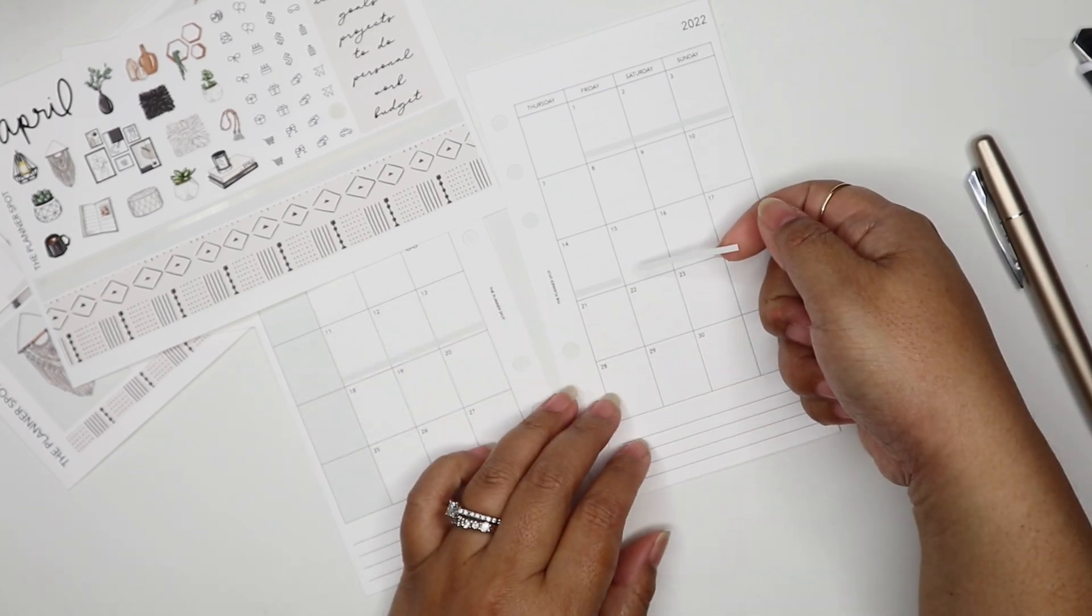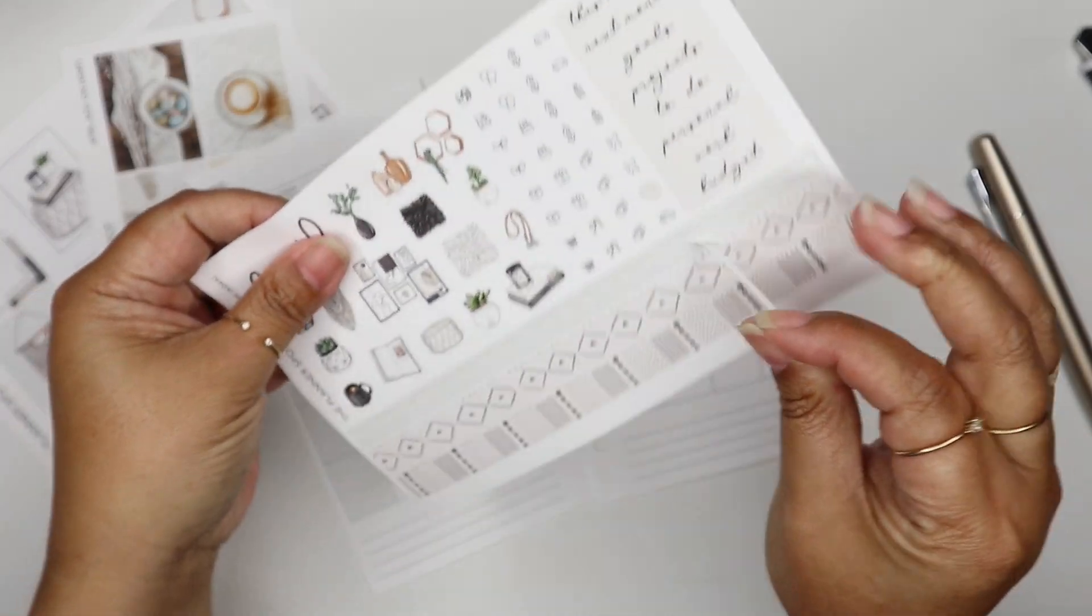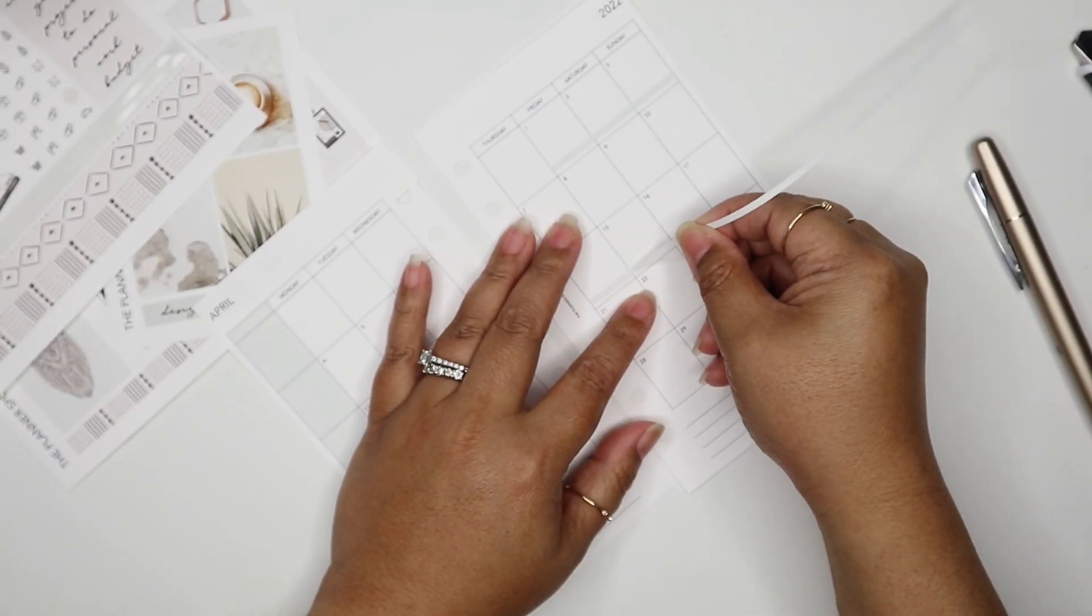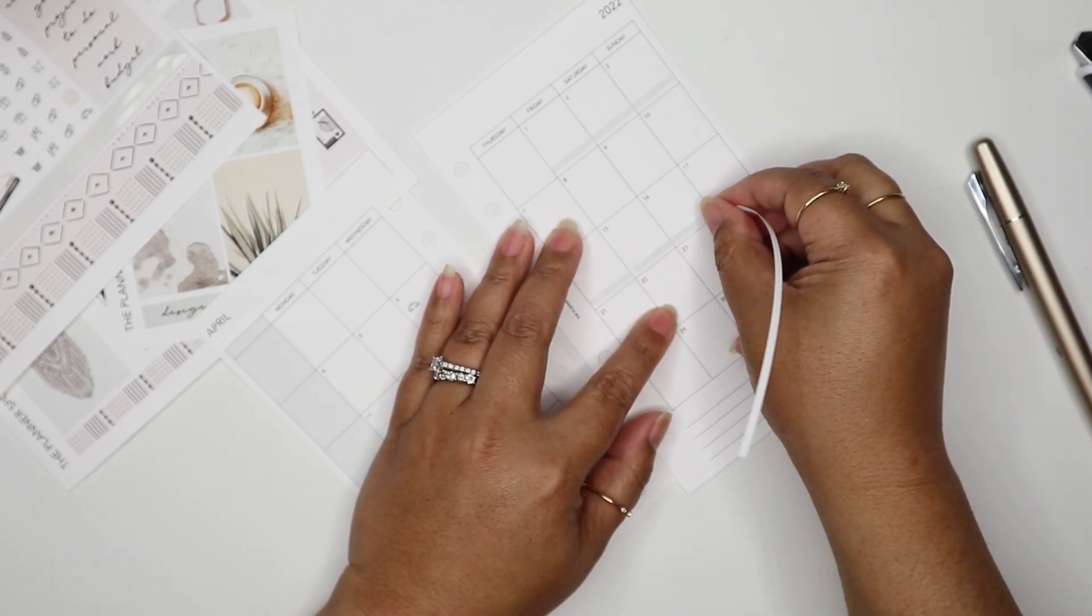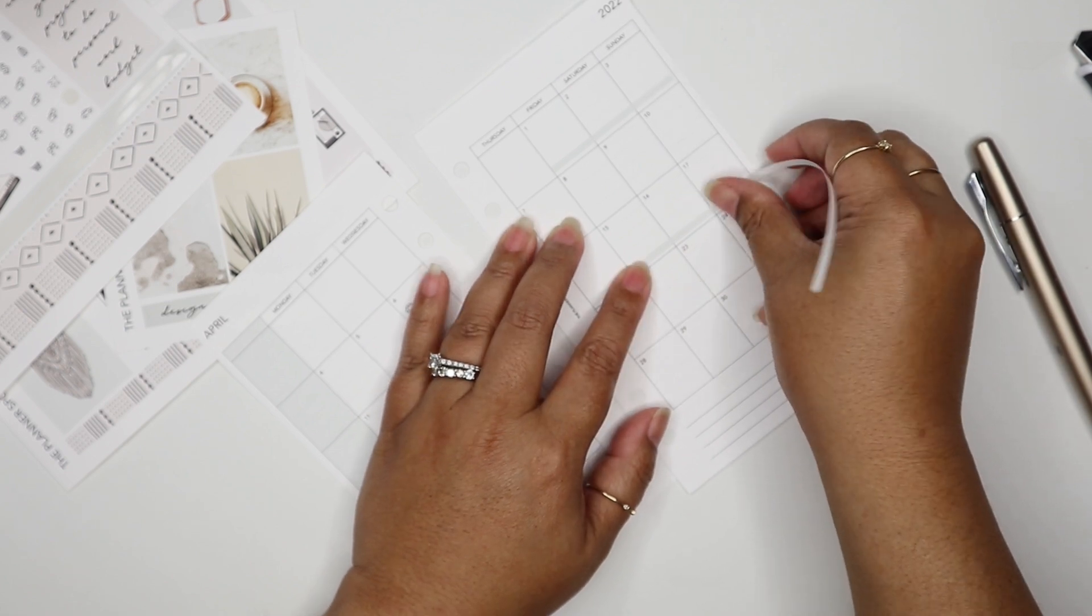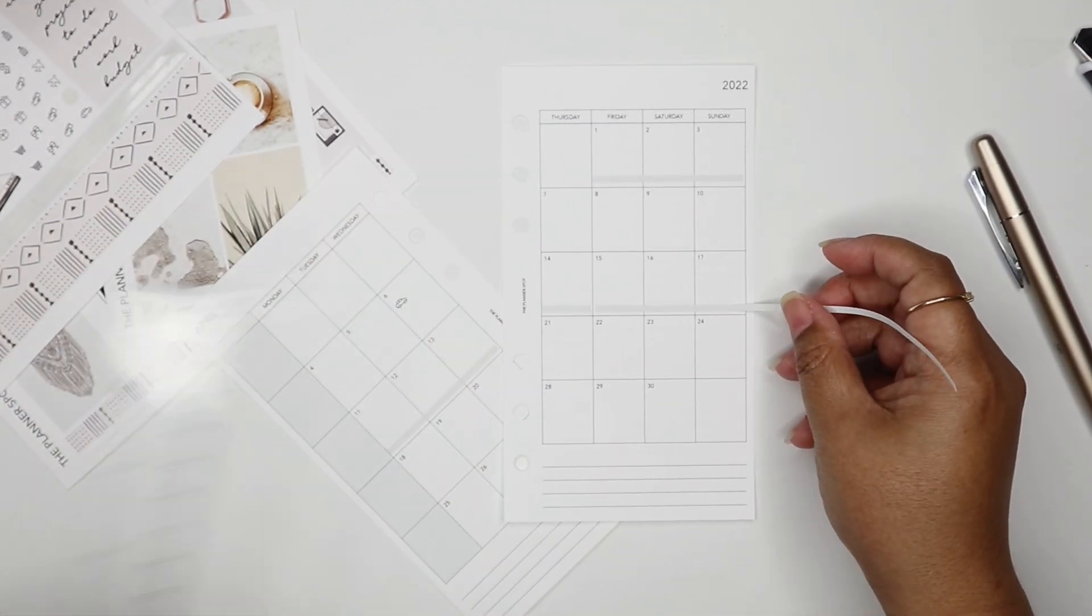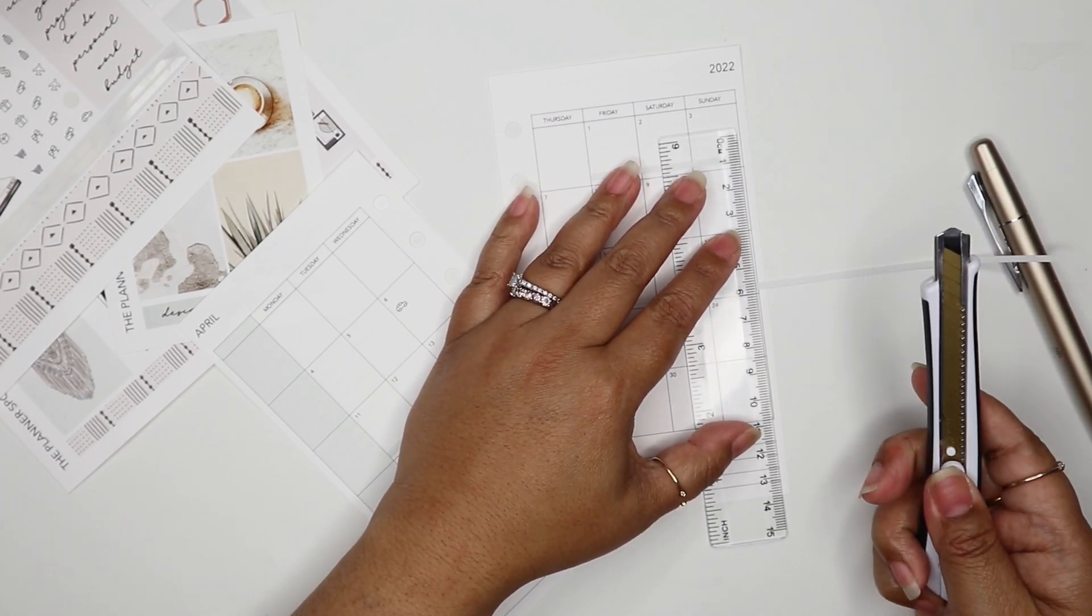This isn't long enough so I'll get a new strip from the 15th. I'll leave a little space to show that it's a separate thing I'm marking now. This is my daughter's Easter break, they're off school for a week.